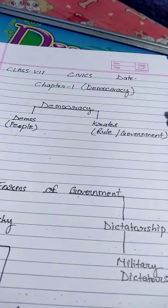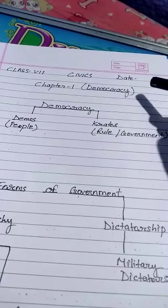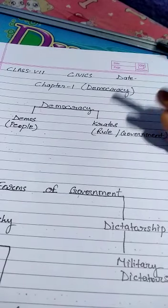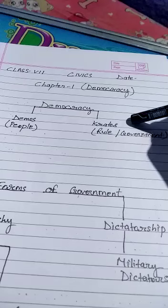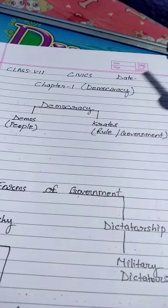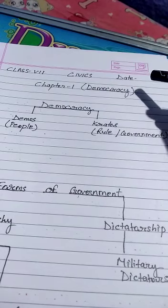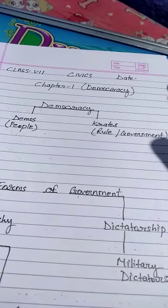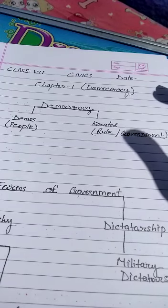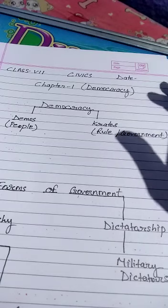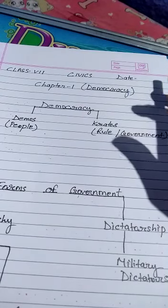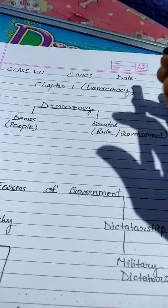In democracy there is a form called direct democracy, where people can vote directly and whatever the majority decides, the decision is final. But that's not possible in countries with large populations. So we believe in and follow the representative democratic system, where people elect their representatives, and the representatives are responsible and answerable to the people who have elected them.